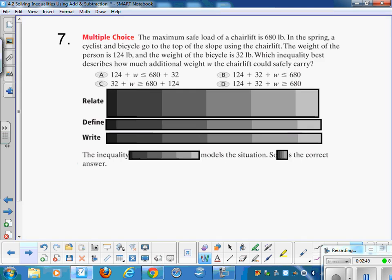Number 7. This one's more like a word problem. It says the maximum safe load of a chairlift is 680 pounds. In the spring, a cyclist and his bicycle go to the top of the slope using the chairlift. The weight of the person is 124 pounds, and the weight of the bicycle is 32 pounds. Which inequality best describes how much additional weight the chairlift could safely carry? So I'll give you a second to look through your choices there. It says the maximum safe load of a chairlift is 680 pounds. So you need to think about that in terms of inequalities.